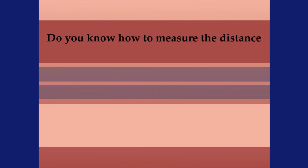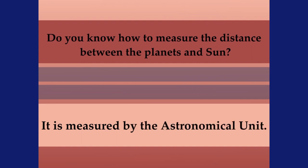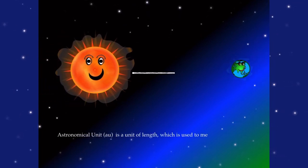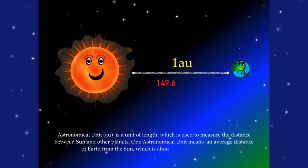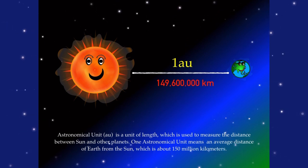Do you know how to measure the distance between a planet and the Sun? It is measured by the astronomical unit. An astronomical unit is a unit of length used to measure the distance between the Sun and other planets. One astronomical unit means the average distance of Earth from the Sun,